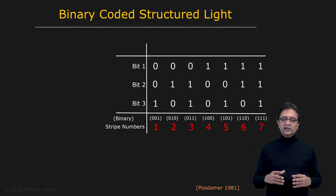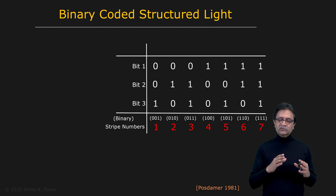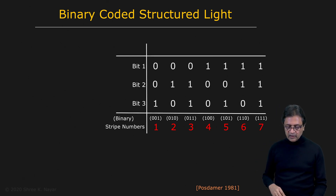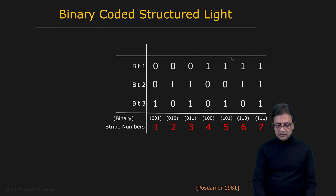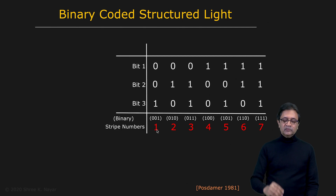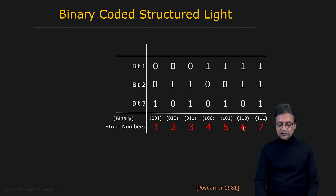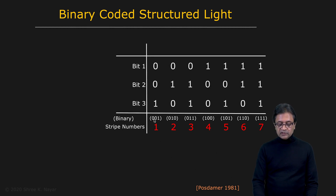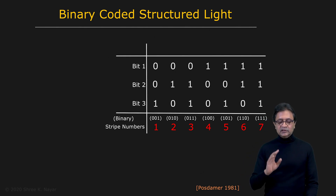This brings us to binary coded structured light. We started with point scanning, then improved with line scanning, and now we want to do even better in terms of number of images. The idea is simple: imagine using seven stripes. We give each stripe a number one through seven, then express these numbers in binary. It takes three bits to represent numbers from one through seven — 001, 010, all the way to 111. Only three bits are necessary — that's the important part.